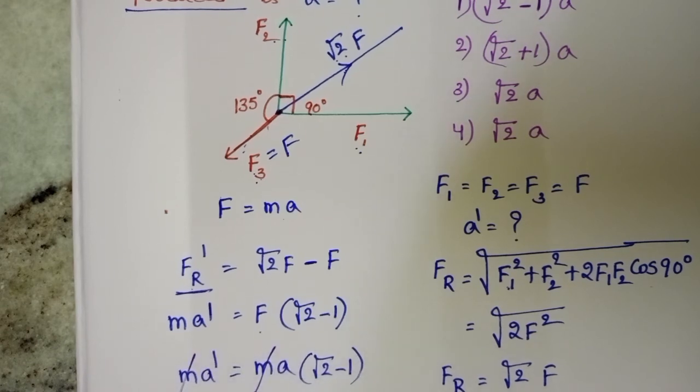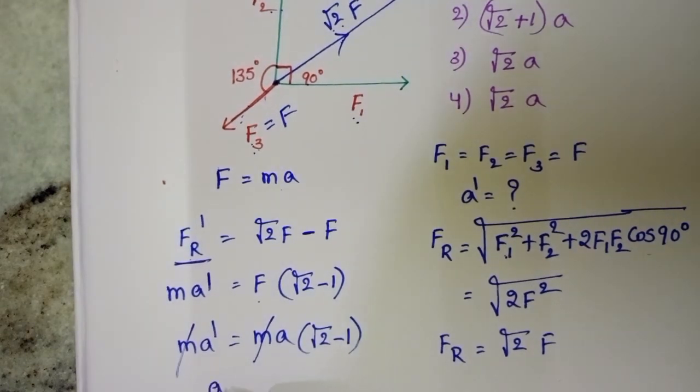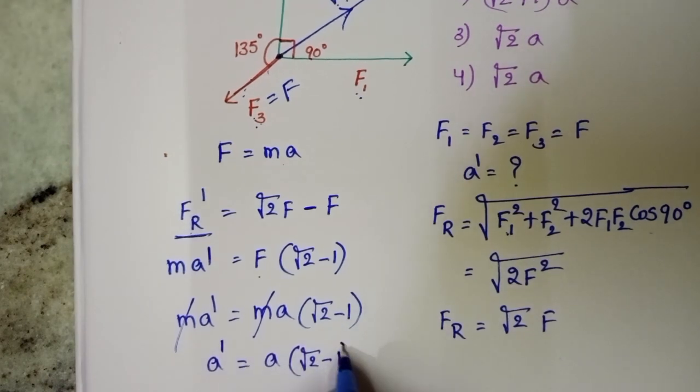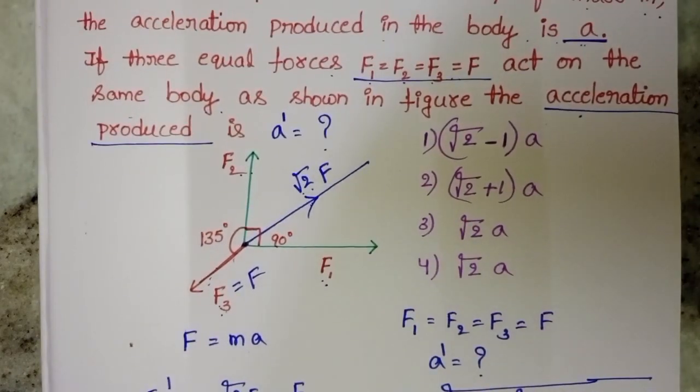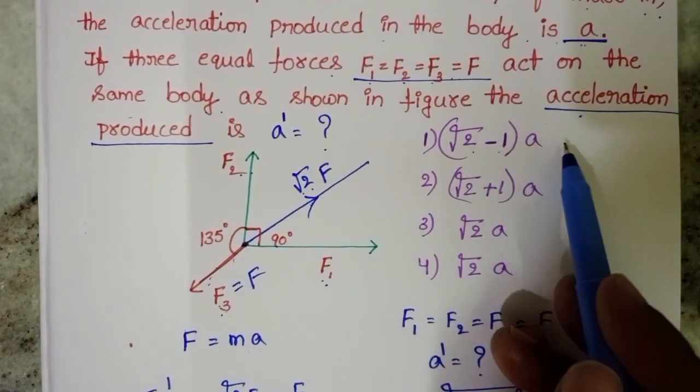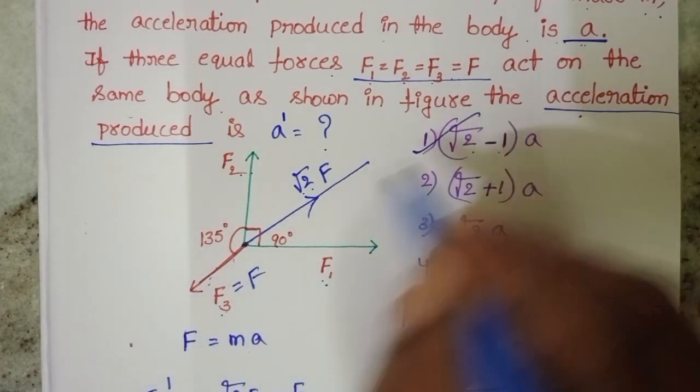On both sides, mass gets cancelled. Acceleration produced on the same body, A dash, equals A into root 2 minus 1. So check the given options. Root 2 minus 1 into A. First option is correct.